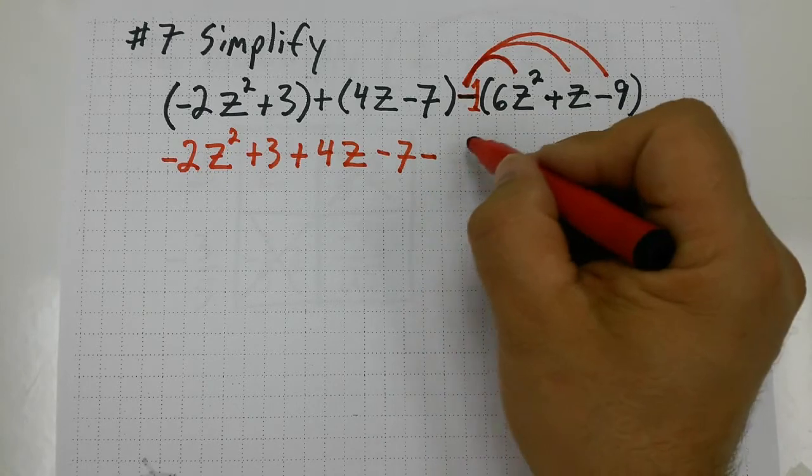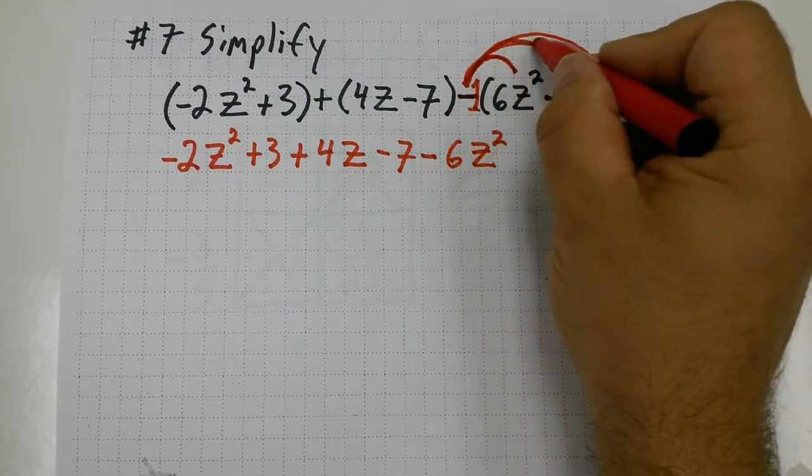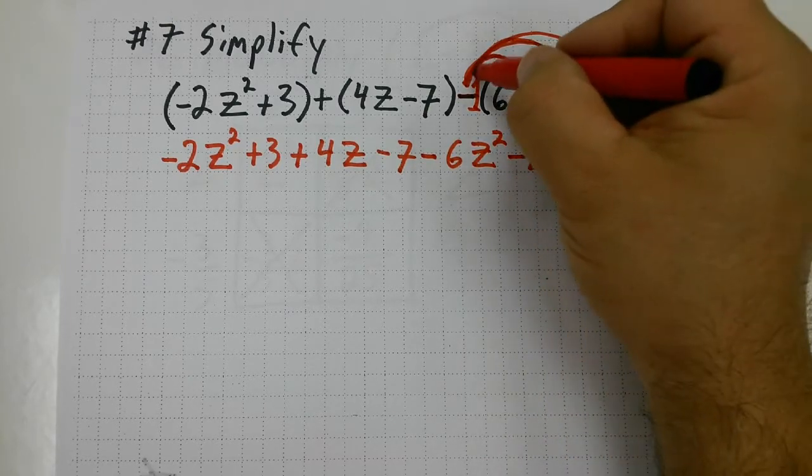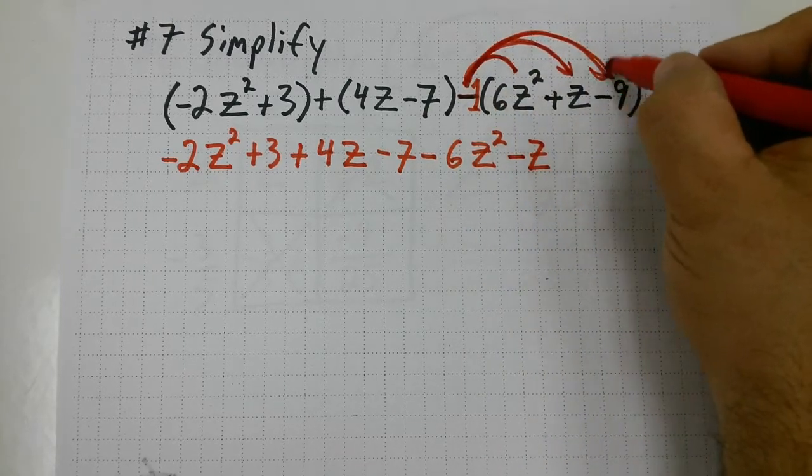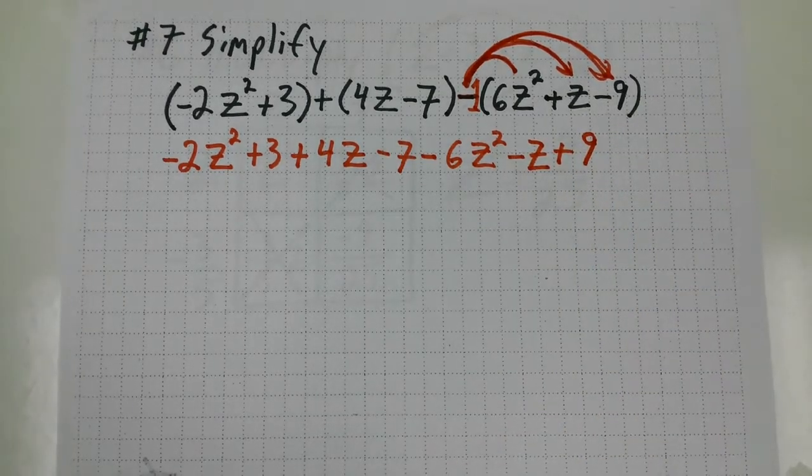So that's going to give me negative 6z squared, minus z. Uh-oh, a negative times a negative—that's going to give me plus 9.